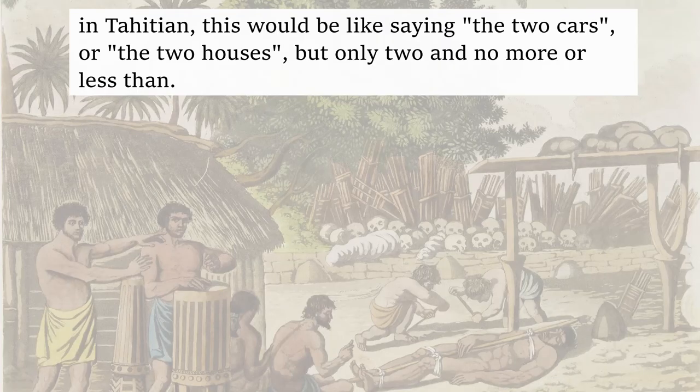The articles. Like many Polynesian languages, Tahitian has the definite article 'te.' However, it also has indefinite articles as well. The Tahitian article system is a little bit complex — it's even more complex than many Romance languages. They have a concept of dual and plural indefinite and definite articles, which is very unusual to most native English speakers. The plural form would be like saying 'the two cars' or 'the two houses,' but only two and no more or no less than two.